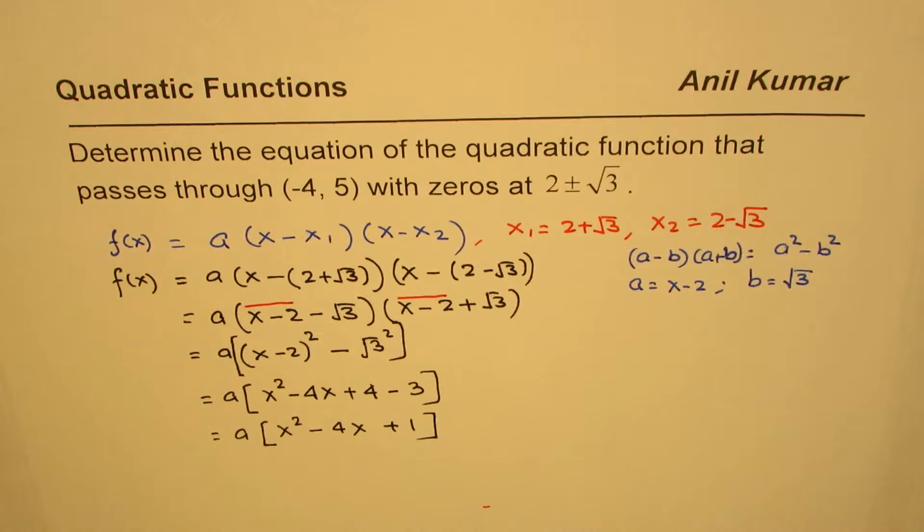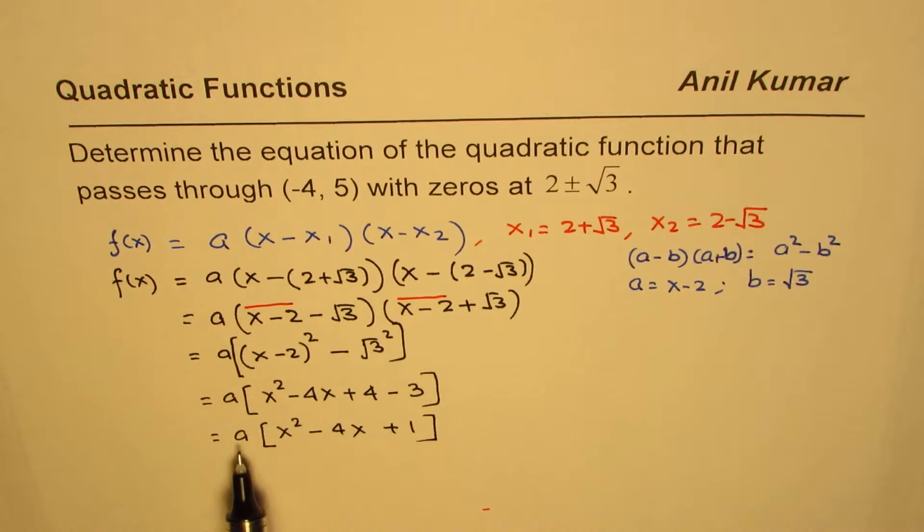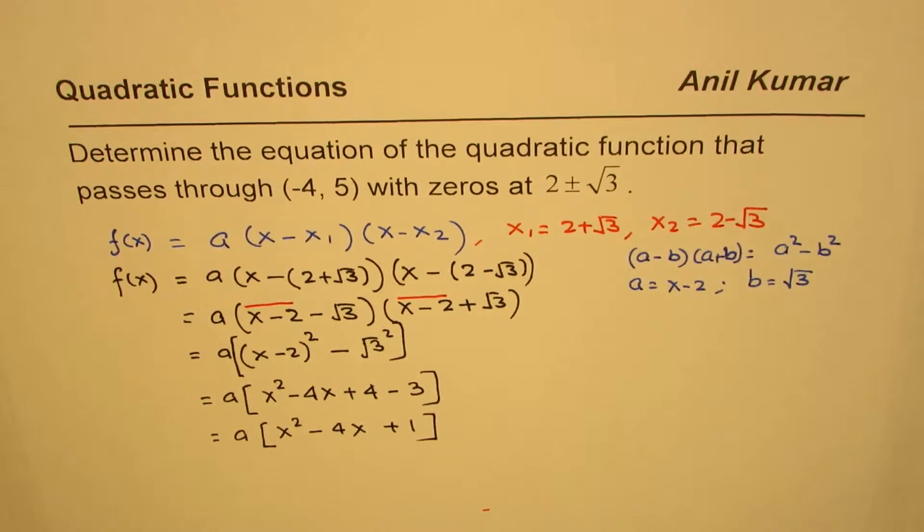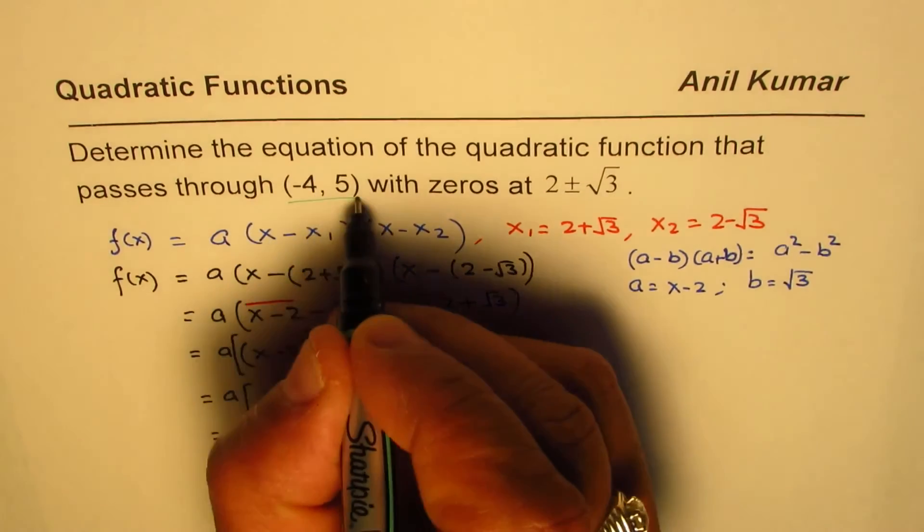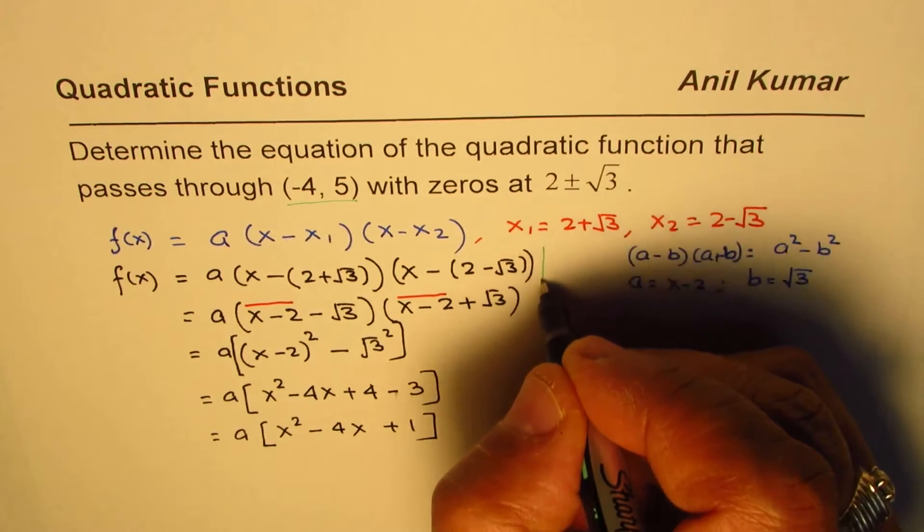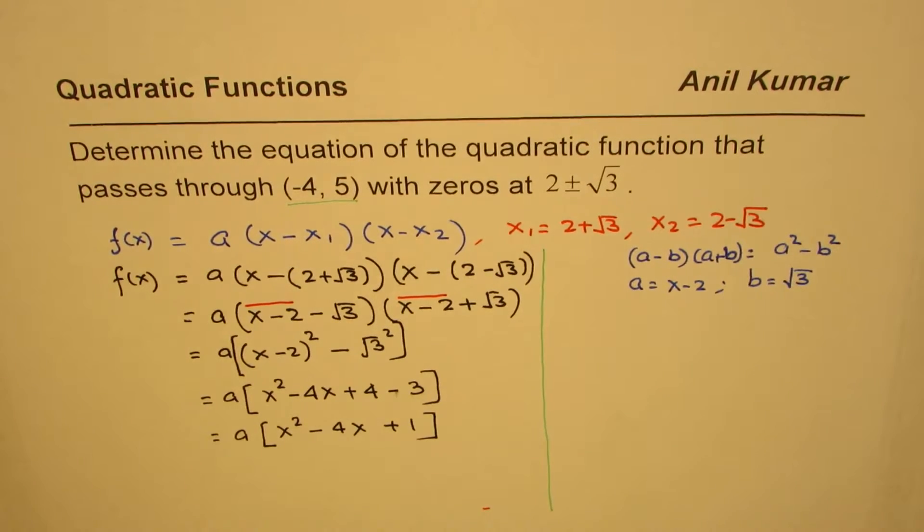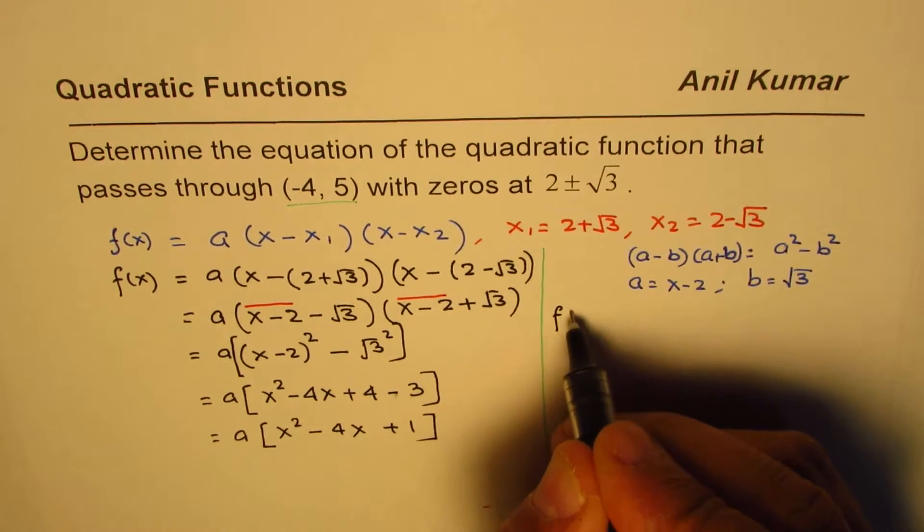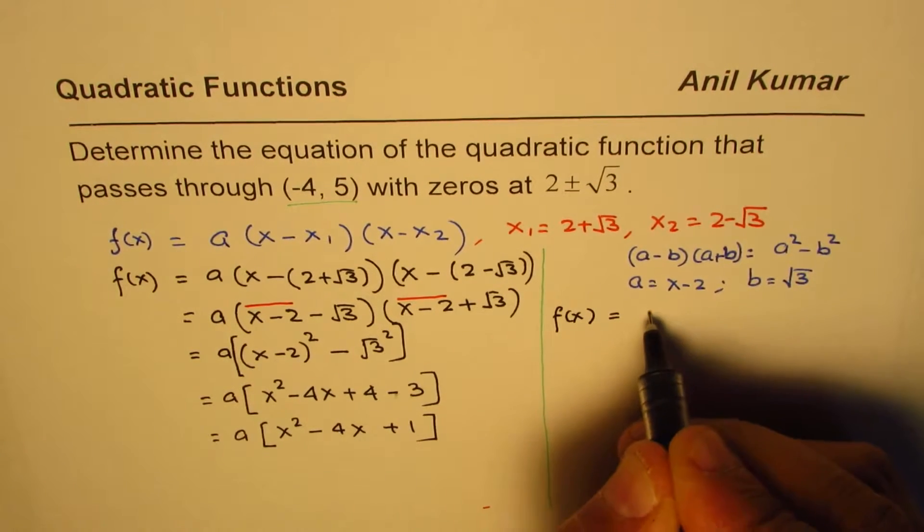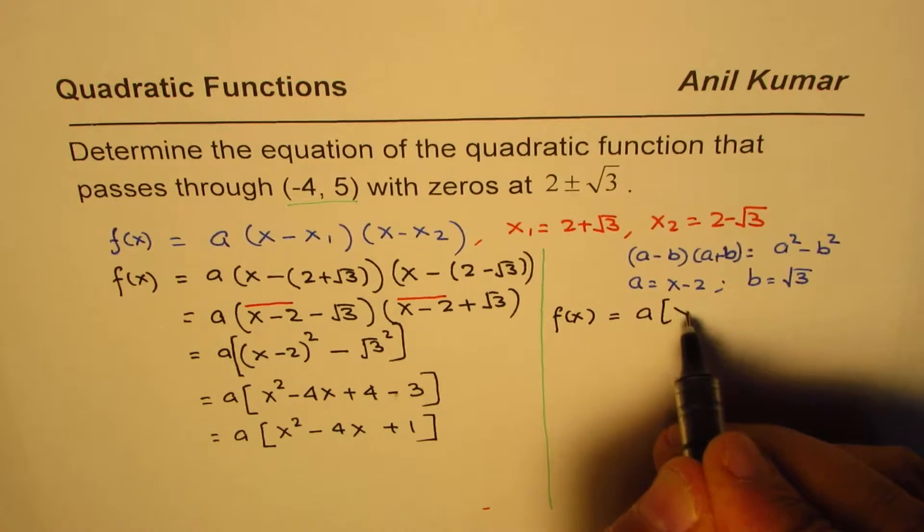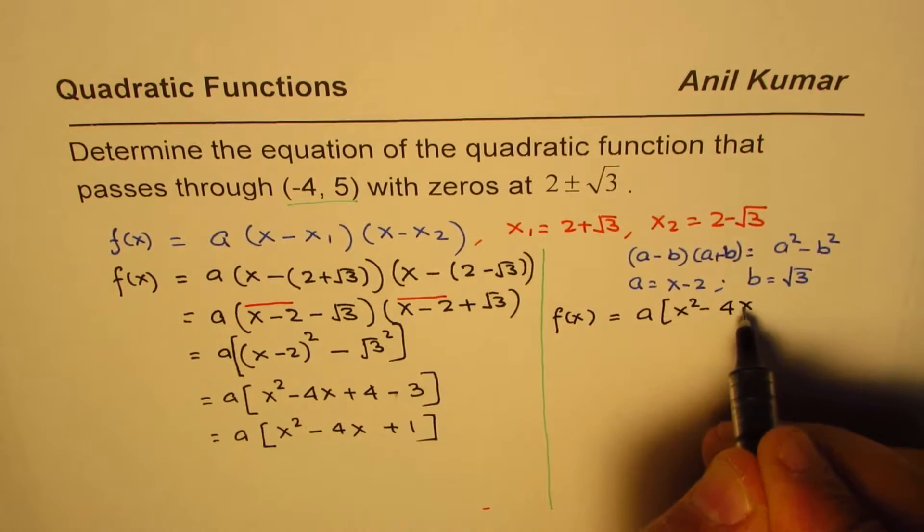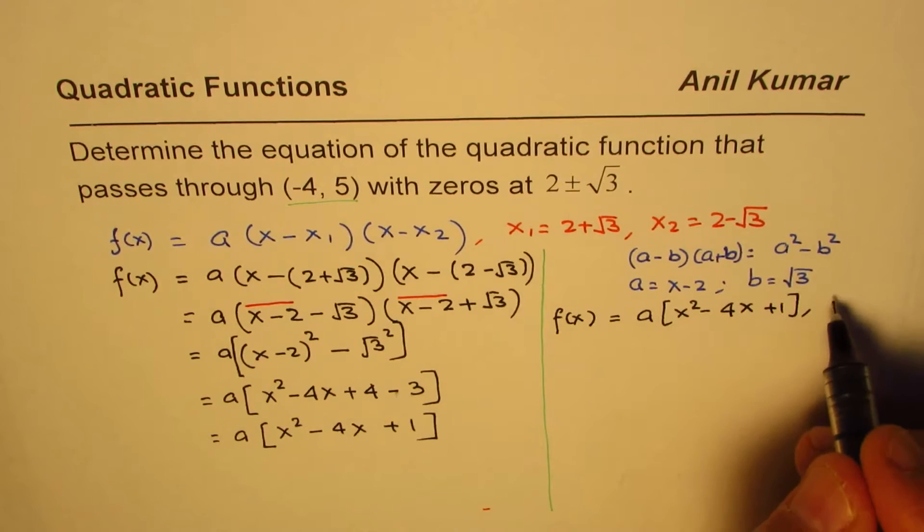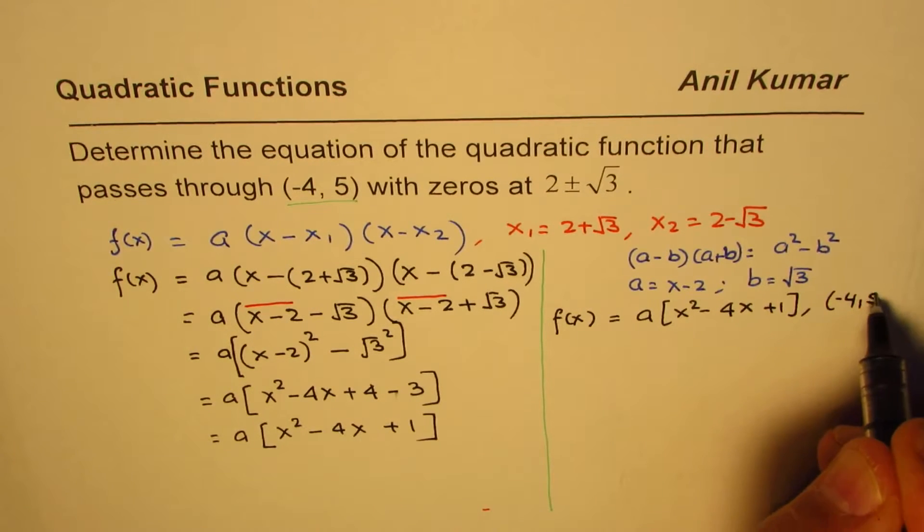We need to find the value of a which we can find using the point given to us. So we'll do it on the right side. The equation for us is f(x) = a(x² - 4x + 1) and we know it goes through the point (-4, 5).